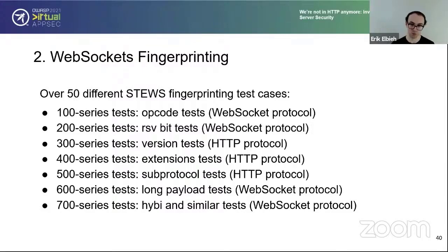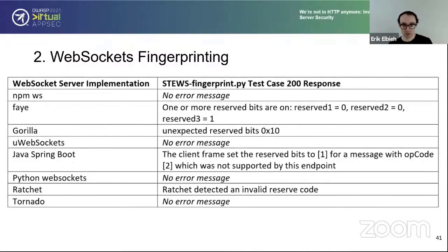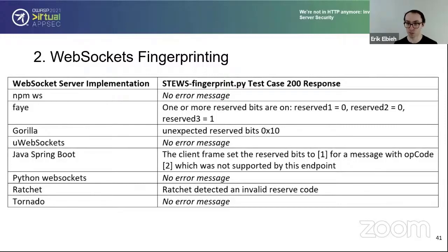There are over 50 different tests used for this fingerprinting tool, split into seven categories, dealing with both the WebSocket protocol and the HTTP protocol. Zooming in on a single test case — test case 200 — we see the names of WebSocket servers on the left and their distinct error messages on the right. These are default values that may be changed, but frequently it was found on public servers that the default error messages remain unchanged. This single test case alone might be able to tell you what's going on on the back end.